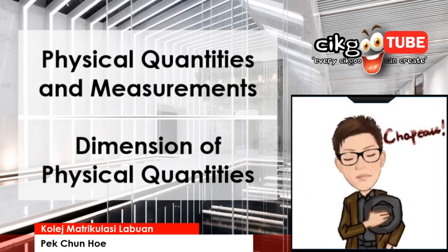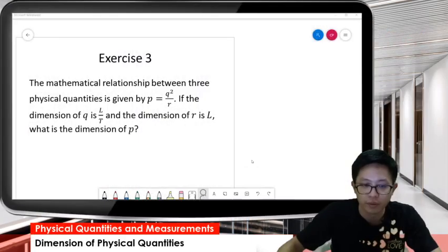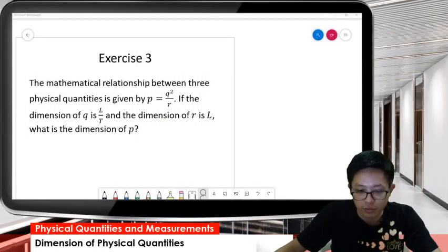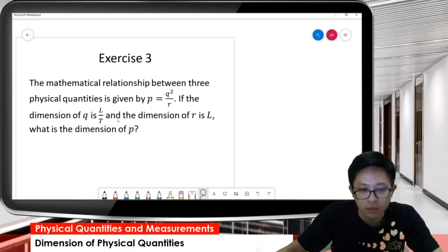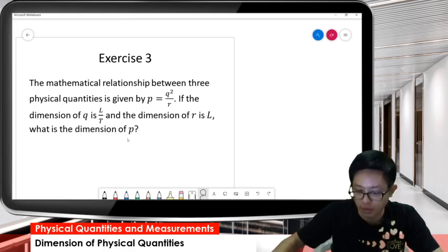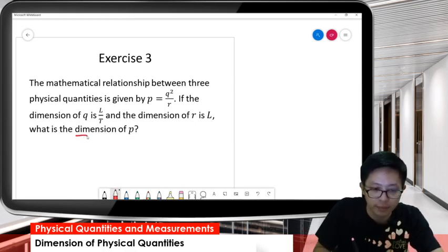Alright, let's continue our lesson on dimension of physical quantities. Let's read the question together. The mathematical relationship between three physical quantities is given by P equal to Q squared over R. If the dimension of Q is L over T and the dimension of R is L, what is the dimension of P? So, the question asks for the dimension of P.